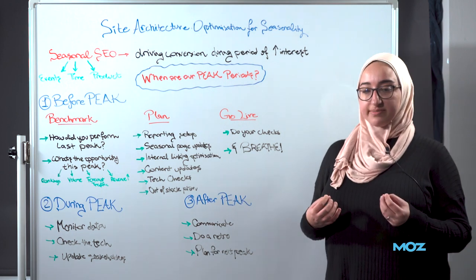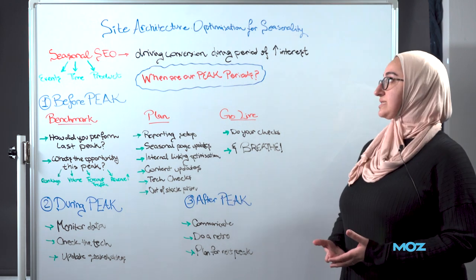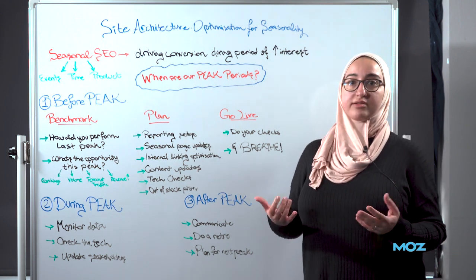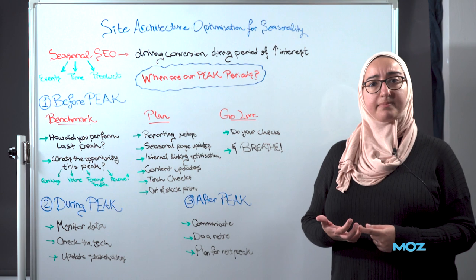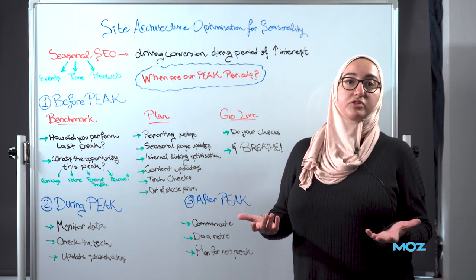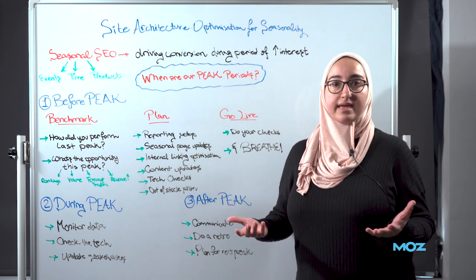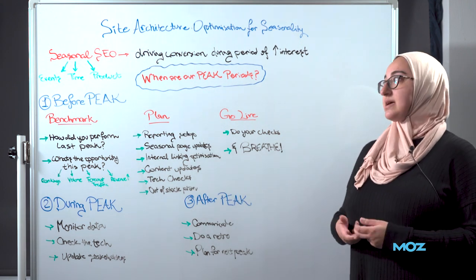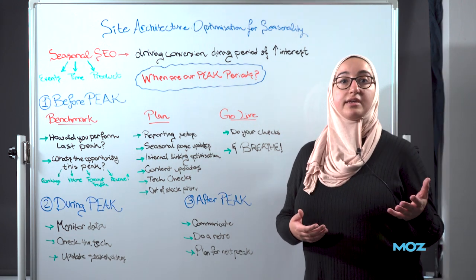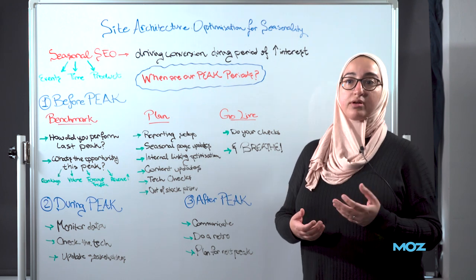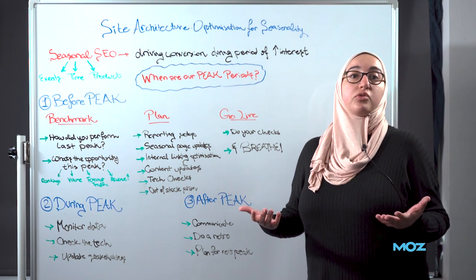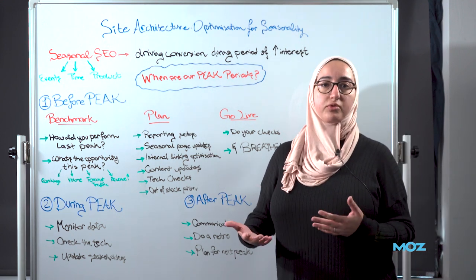Seasonal SEO is this concept of driving conversions during a period of increased interest. It could be one of many reasons — it could be event-based, time-based, or because of a product. Some examples of event-based seasonality are Valentine's Day, Mother's Day, or Father's Day. Time-based could be the end of the year, January, or summer. And product-based is usually around a new product launch, like the new iPhone or the new MacBook.